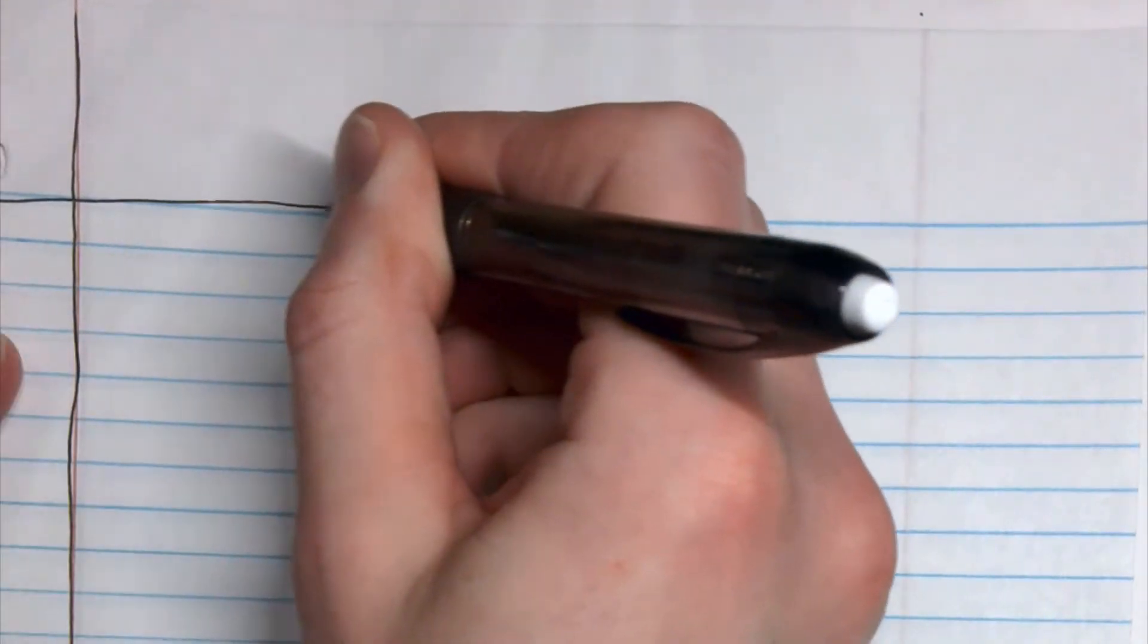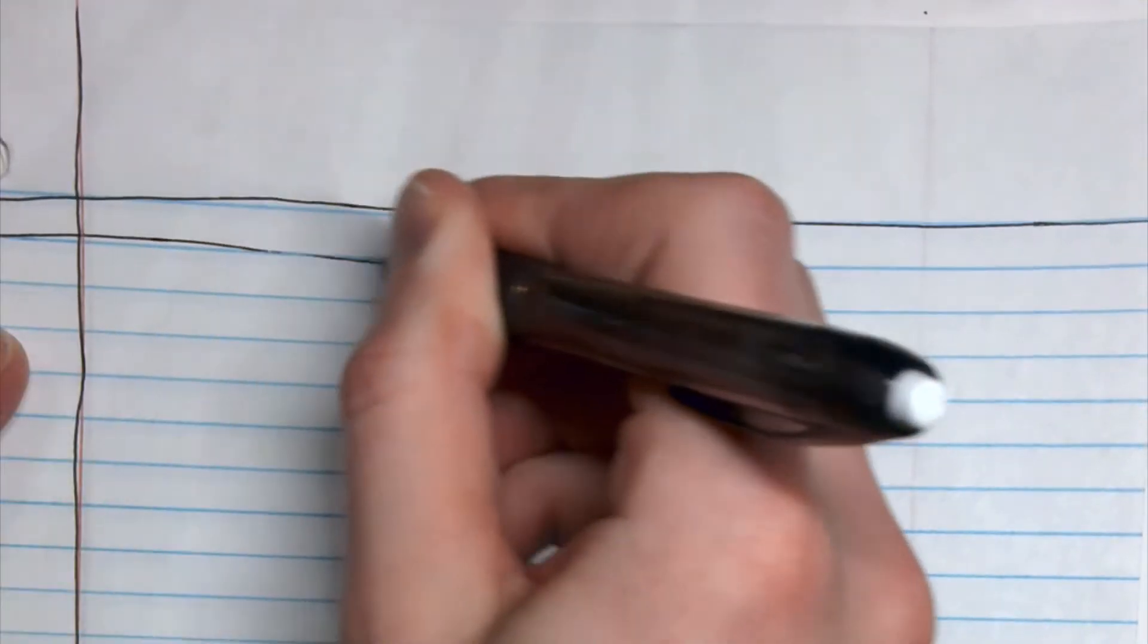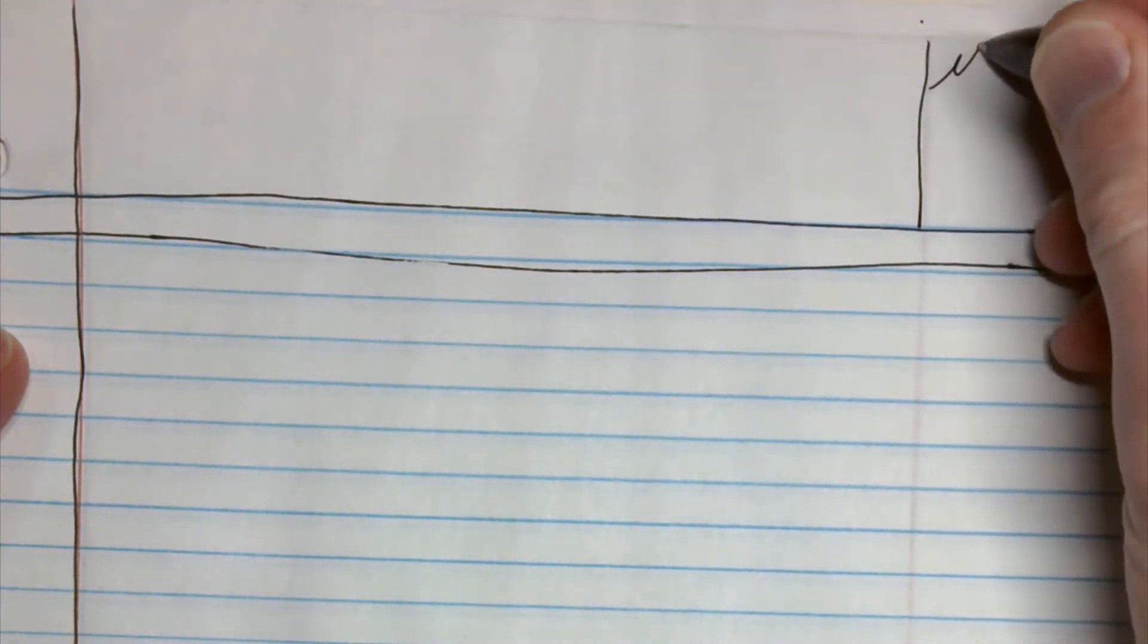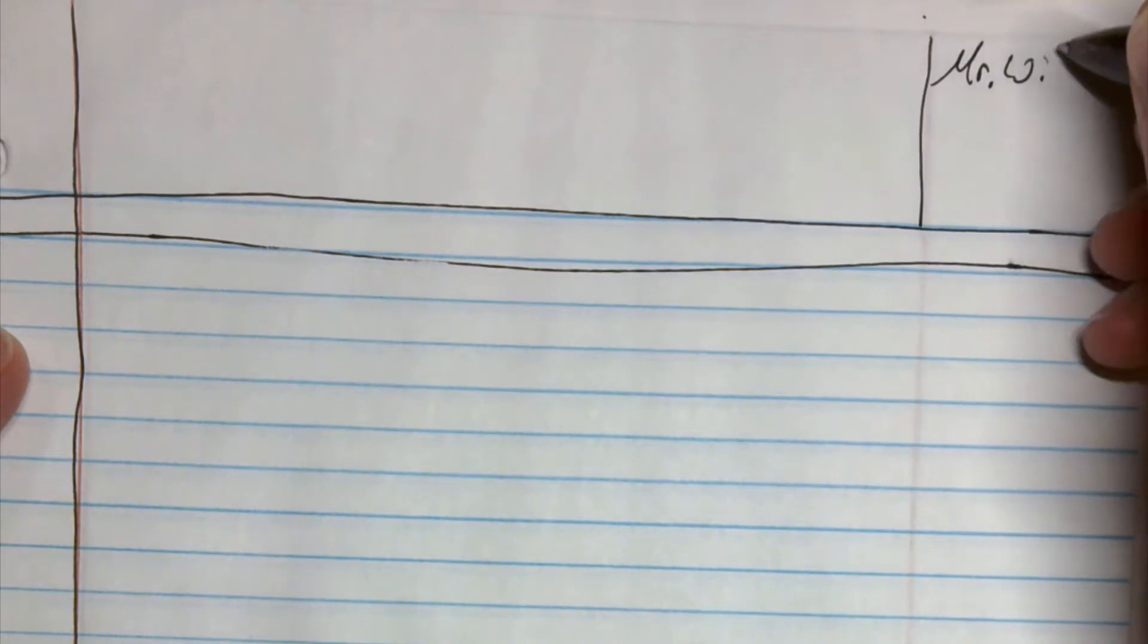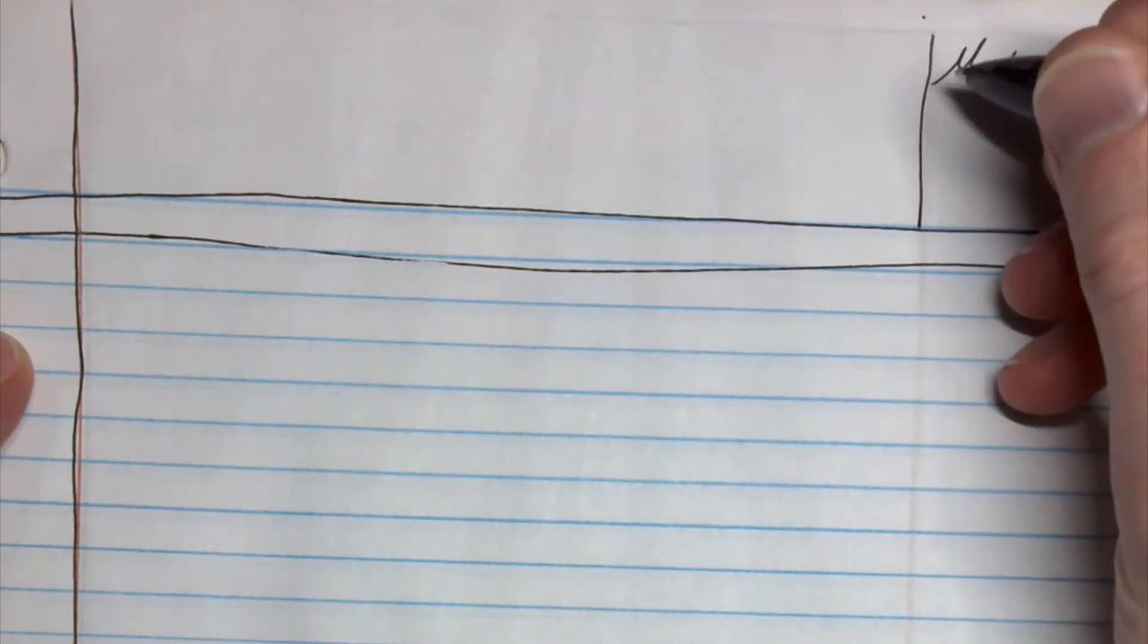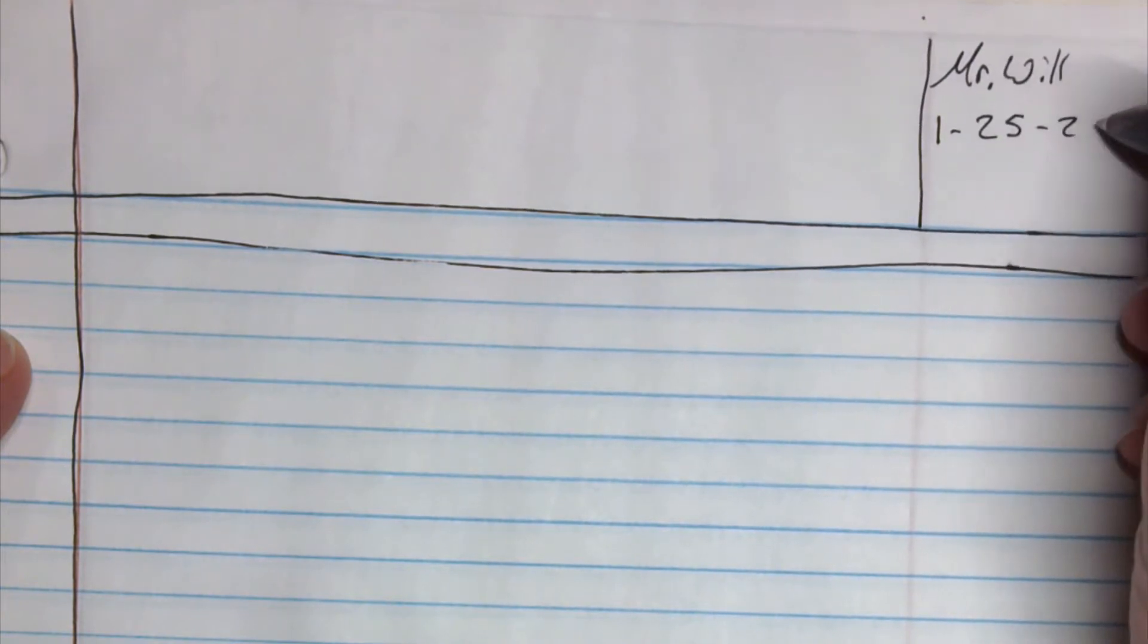Hey everyone! We're going to be taking some notes on simple machines. Let's set up our page for Cornell notes. We draw a line along the side, two lines across the top, and then we have our space over here. Put our names on the top right. I'm going to put Mr. Will, and notes are going to be 1-25-21.